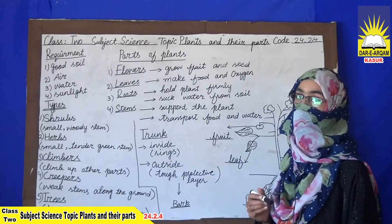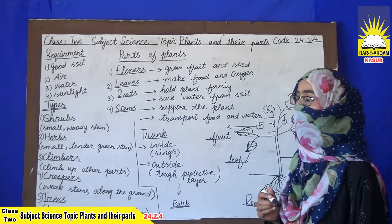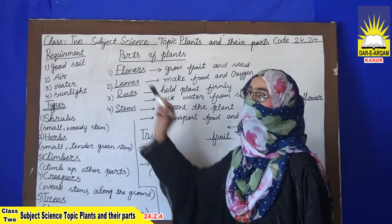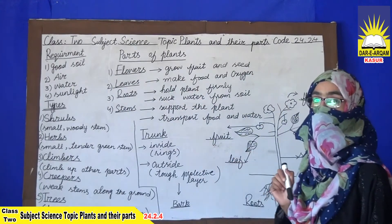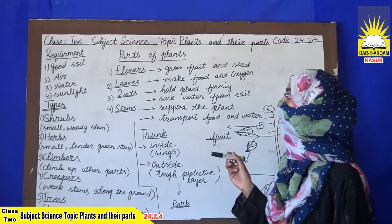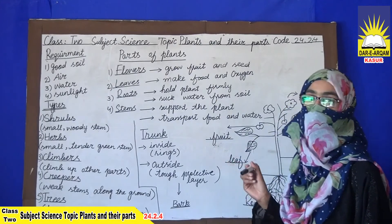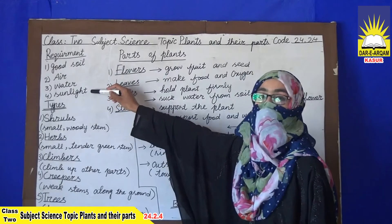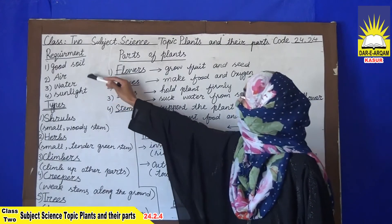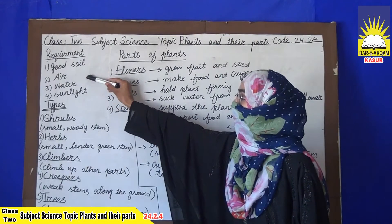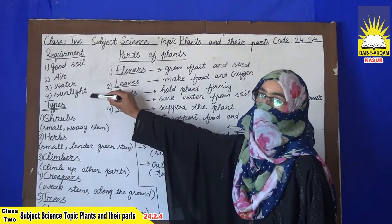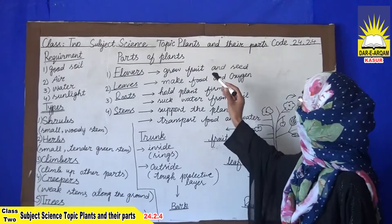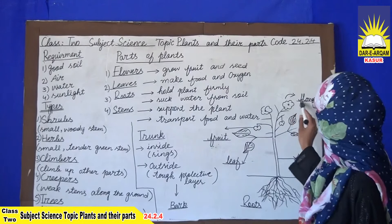Seeds grow into plants. We are discussing the plant's requirements — how a plant grows in better soil and better air. If we give all these requirements to the plants: good soil, air, water, and sunlight, we can get a good plant.